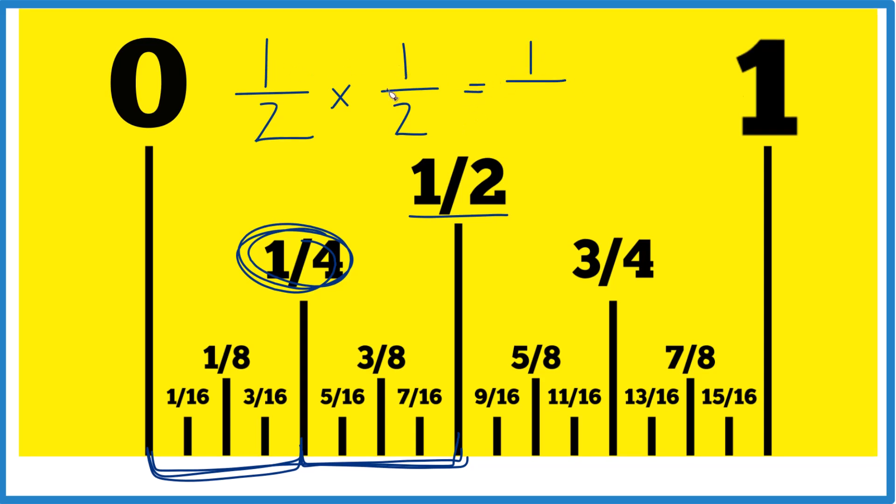One times one is one. Two times two is four. So you end up with one fourth, which is what we found before.